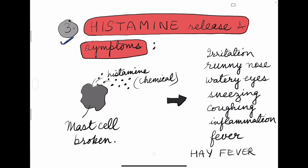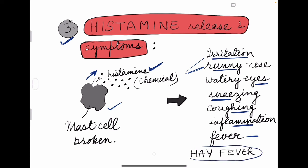The third step: the broken mast cells will release a chemical — a protein — the histamine, which will finally lead to the allergic reaction. This histamine will cause irritation: runny nose, watery eyes, sneezing, coughing, inflammation, or fever — like hay fever, which is a particular disease caused by pollen grains, named hay fever. This is the third step in an allergic reaction.